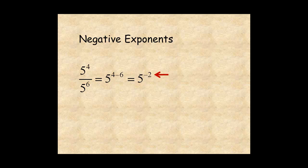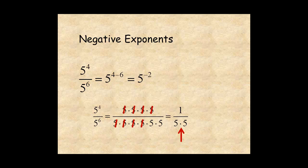5 to the 4 over 5 to the 6 is 4 factors of 5 over 6 factors of 5. 4 factors of 5 cancel out, leaving 2 factors of 5 in the denominator, which can be written as 1 over 5 to the power of 2.